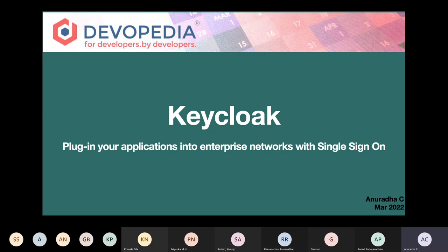This library, which is called Keycloak, is actually developed by Red Hat. It is open source and this is an easy way out for startups and small developers to try and bridge the gap between their products, their applications, and big enterprise networks — and not just enterprise networks, even social networks.